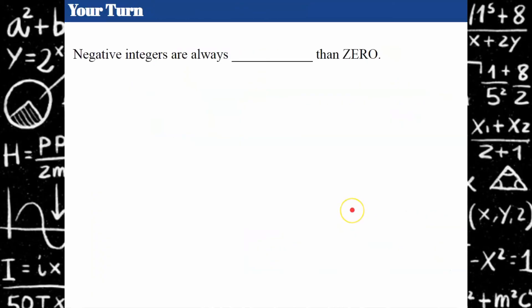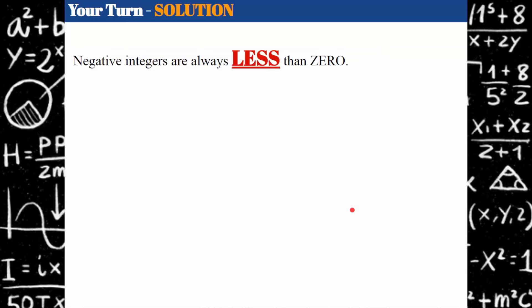Your turn. I'm going to ask you to think about negative integers. Are they always blank than zero? What word could you put in that spot to make the statement true? Come back and hit play when you're ready. Welcome back — negative integers are always less than zero.